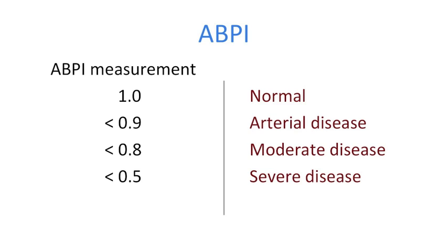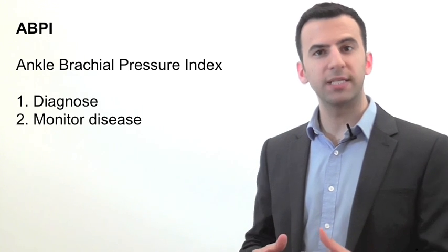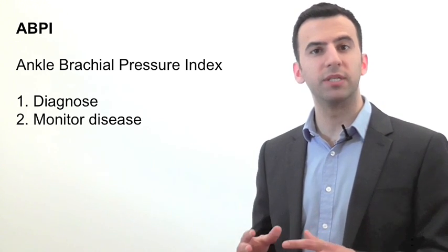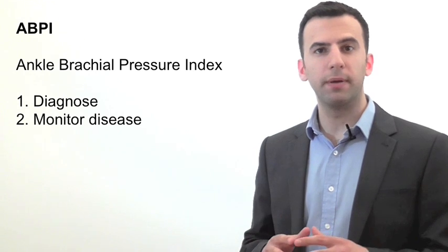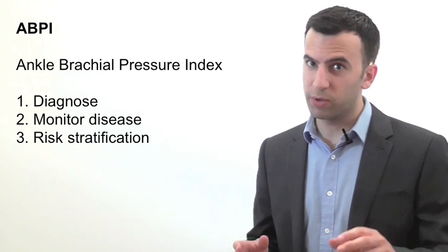But what if the ABPI is elevated? This may happen, for example, where vessels calcify and stiffen in diabetic patients, meaning that the blood pressure cuff needs to be filled to a higher pressure to overcome this extra resistance, leading to a falsely elevated ABPI. This phenomenon can be strongly suspected in an ABPI above 1.3. We can use the ABPI to help us diagnose peripheral arterial disease, to provide serial objective measures of response to treatment or monitoring of disease progression, and a reduced ABPI also tells us that a patient may be at risk from cardiovascular events, even if there is no claudication.